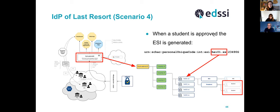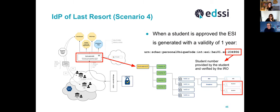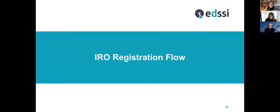The ESI is generated using two ingredients: the SCHAC home organization code of the institution — which we already know from the registration process — and the student number provided by the student and verified by the IRO. Combining these two things together with the schema for the ESI, we generate an ESI for the student's record. Importantly, if in the future that institution enables ESI capability locally, they can just continue using these same numbers because the schema is identical.